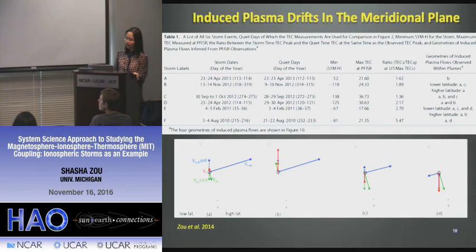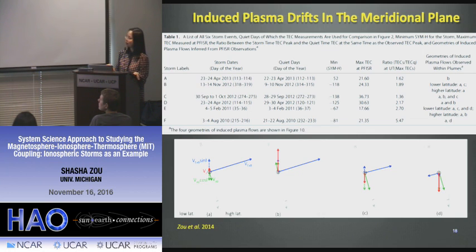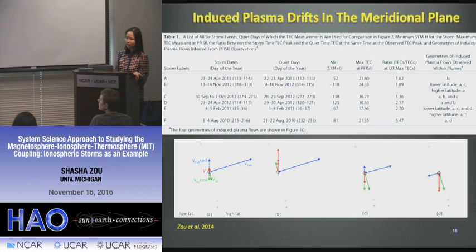For the moderate and intense geomagnetic storms studied, we found four different kinds of induced plasma drifts — various combinations of anti-parallel flows and ExB flows. The interplay between anti-parallel flows due to thermospheric wind and convection flows determines the density and variabilities within the plume itself. It's not just pure transport from the base region — there are many processes within the plume generating small-scale density structures.